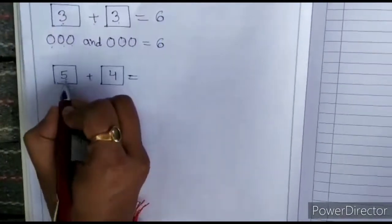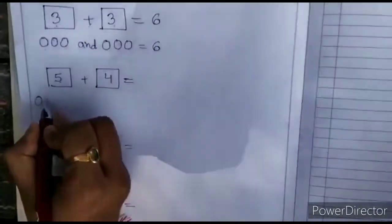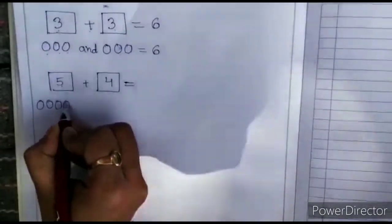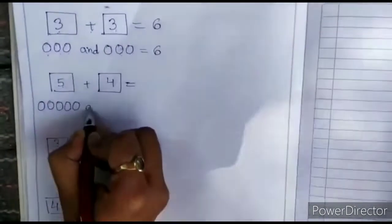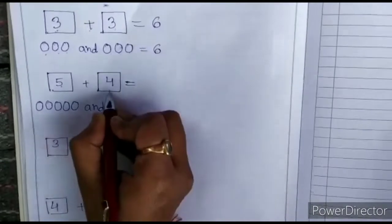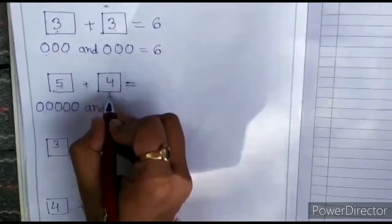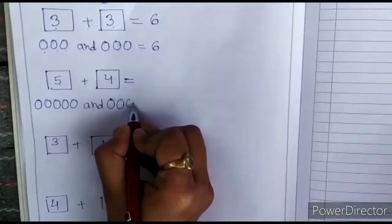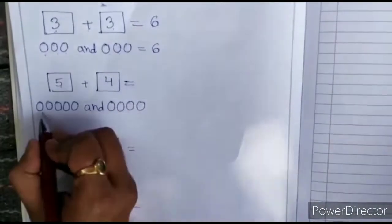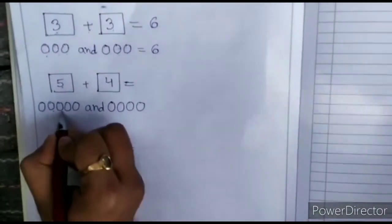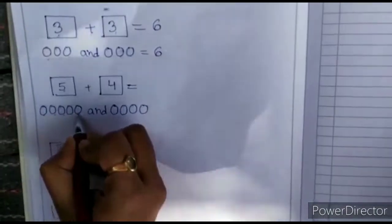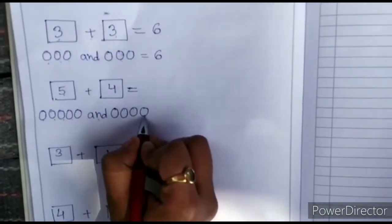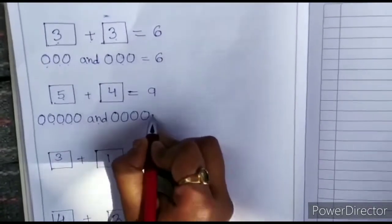5 plus 4. So, 5. 1, 2, 3, 4, 5 and 4. 1, 2, 3, 4, 2, 3, 4, 5 and 6, 7, 8, 9 is equals to 9.